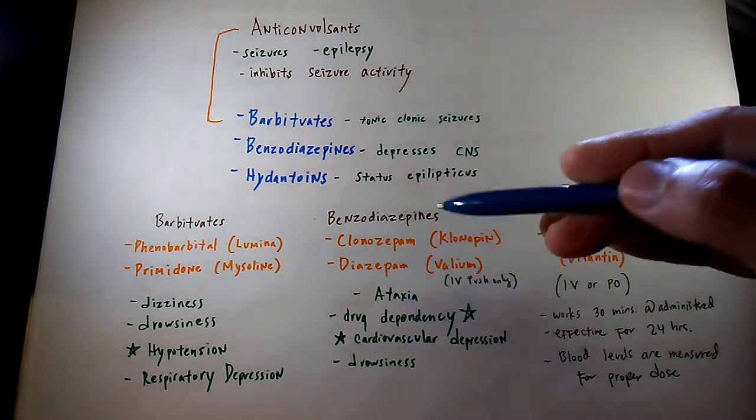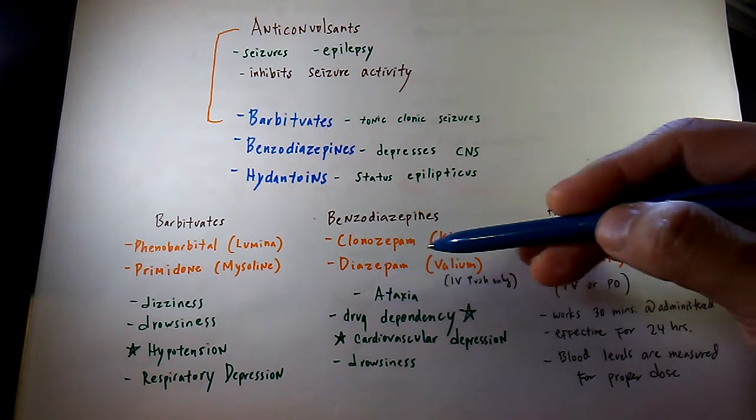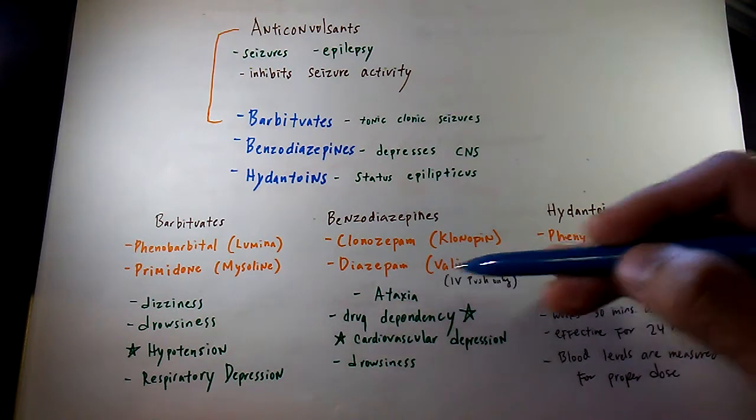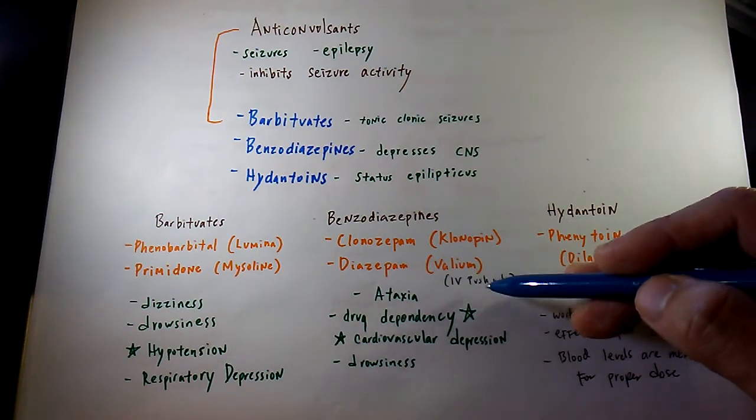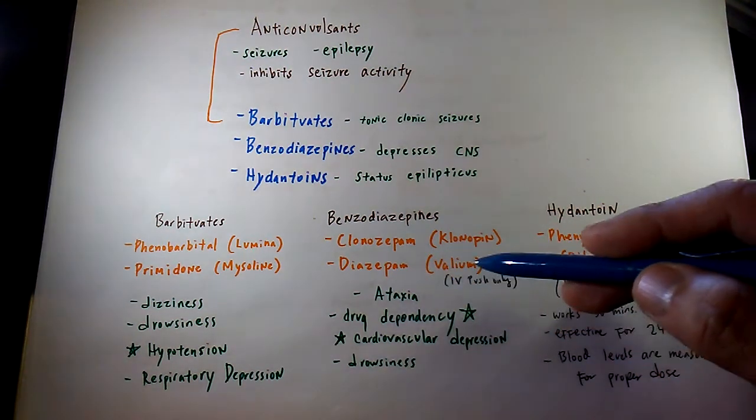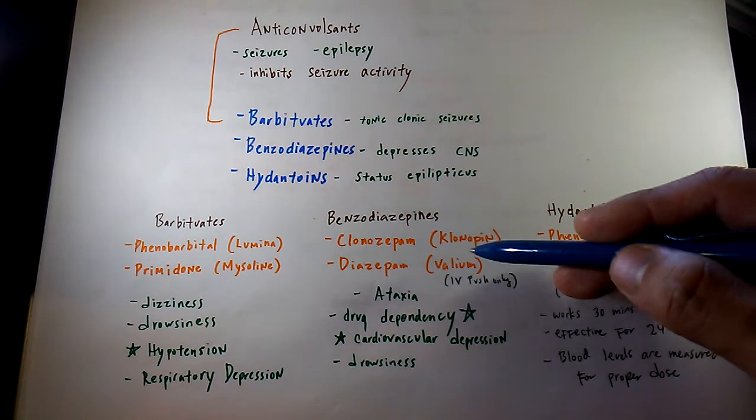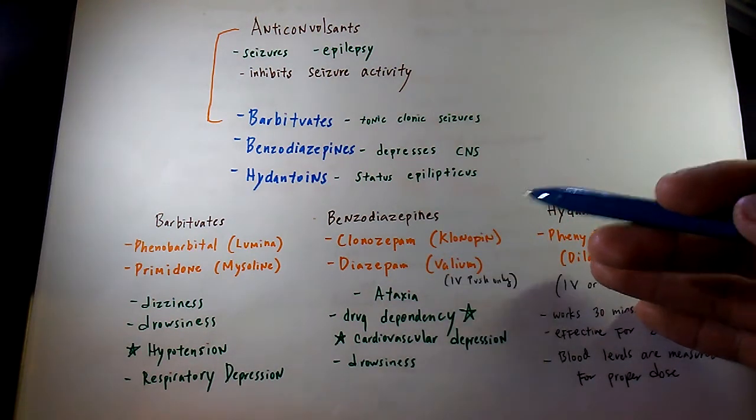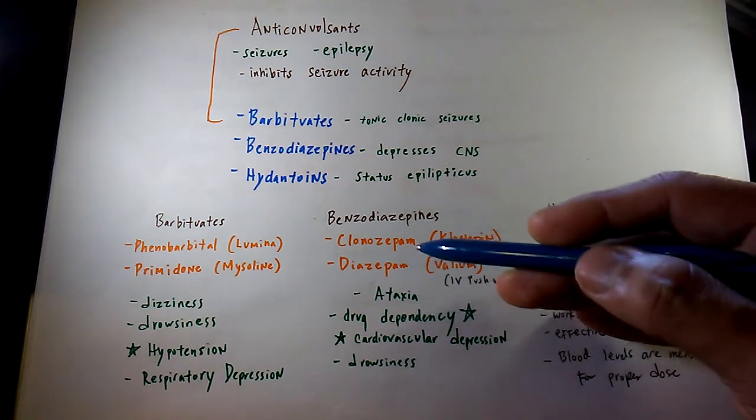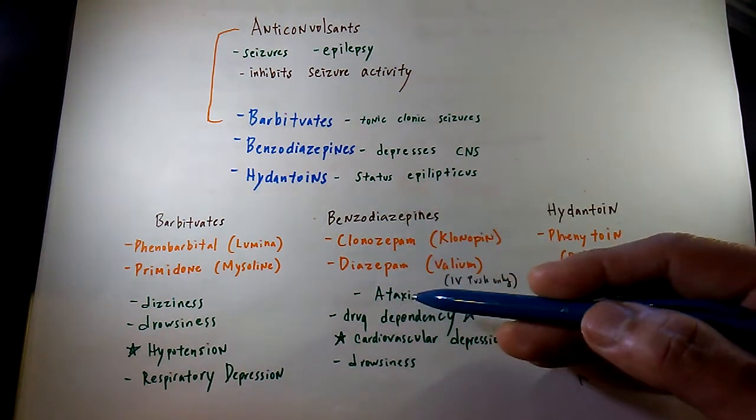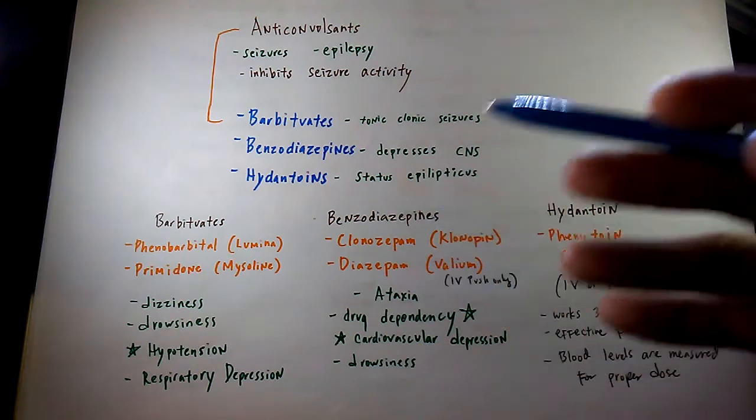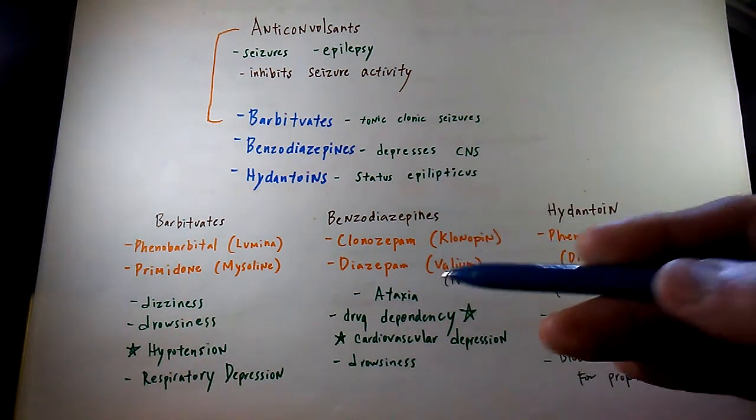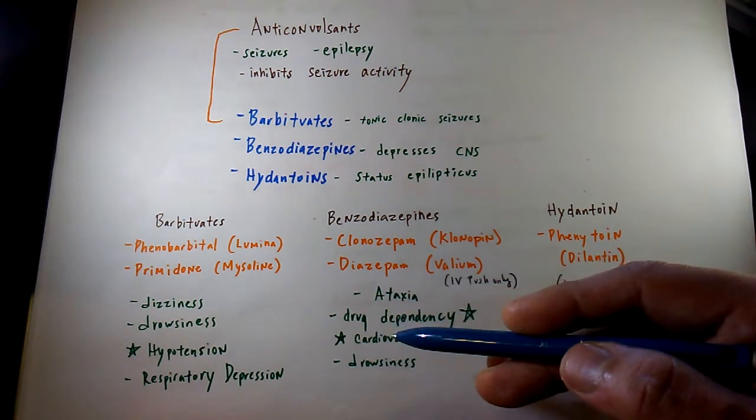Next are benzodiazepines. The two most commonly used drugs are clonazepam (Klonopin) and diazepam (Valium). Valium is given IV push only, not as an infusion. Side effects for both drugs include ataxia, which is impaired balance or coordination in the patient.